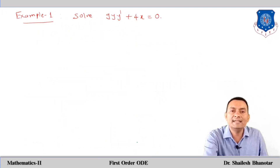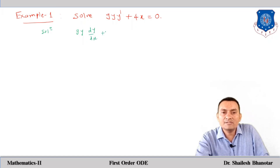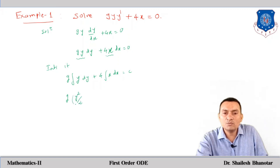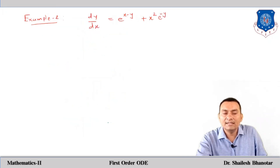Let us solve the first example: 9y dy/dx + 4x = 0. This can be rewritten as 9y dy + 4x dx = 0. Integrating both sides: 9∫y dy + 4∫x dx = C, giving 9·(y²/2) + 4·(x²/2) = C, which simplifies to 9y² + 4x² = C (after absorbing the factor of 2 into C). This is the required general solution.